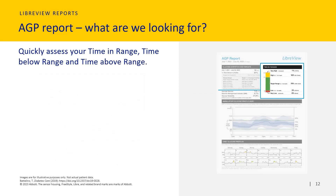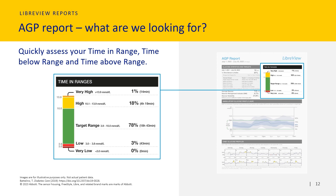The next section shows your time in range, time above range, and time below range. Time in range, shown in green, is the percentage of time over the past 14 days that your glucose has been within your target glucose range — this is a great indication of your overall glucose control. In this report, the target range will always be 3.9 to 10 millimoles per litre, which is the guideline for most people with diabetes. You can also see the percentage of time above range in yellow and orange, and the percentage of time below range in red. The general recommendation for most adults with type 1 or type 2 diabetes who are not pregnant, not older, nor at risk, is to aim for more than 70% time in range, less than 4% below, and less than 25% above range — but don't be discouraged if you're not seeing this right now. If you're unsure of your individual target for time in range, please discuss this with your healthcare professional.